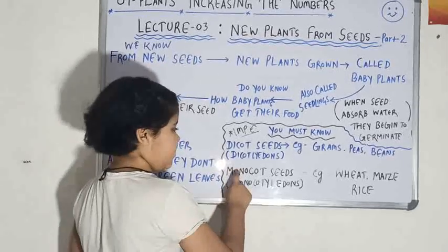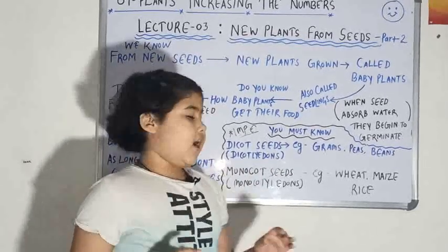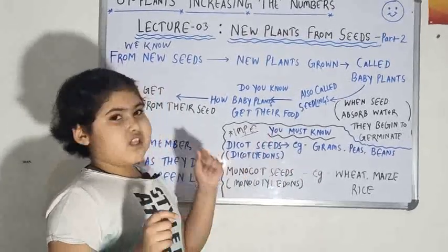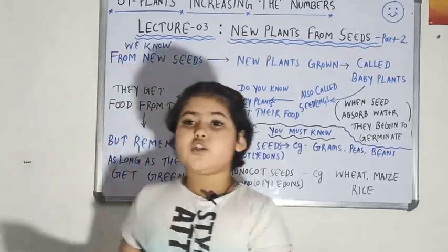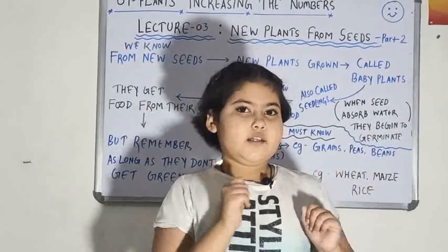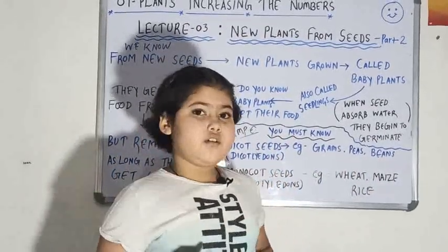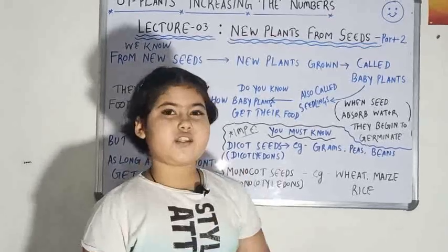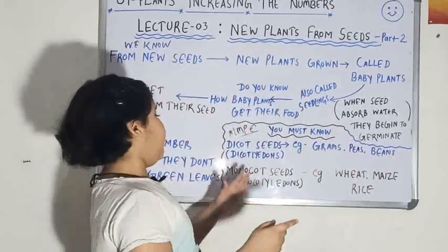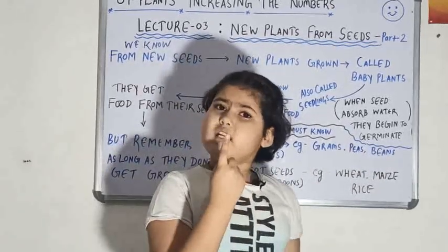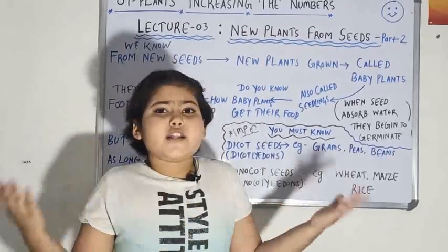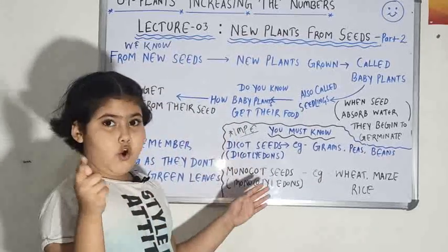And here is monocot seed. Now monocot seed is also known as monocotyledons, just like dicot seed. So now see what is monocotyledons. Monocotyledons just like I have told in dicotyledons there were two seed leaves. But in monocotyledons there will be only one seed leaf. And when a particular seed is having one seed leaf it is known as monocotyledons. Got it.